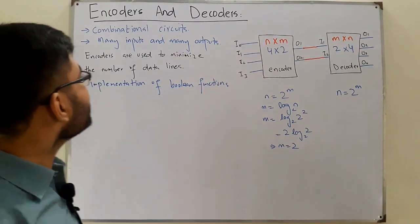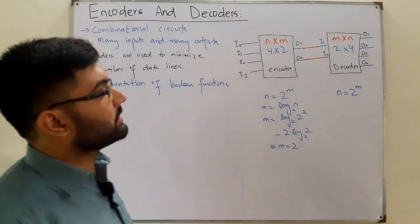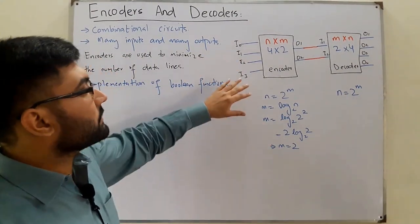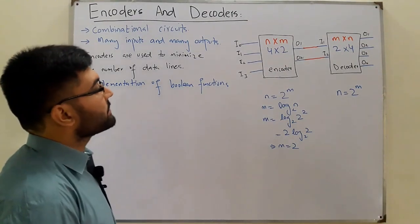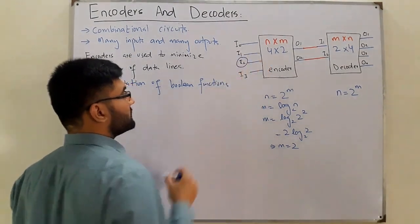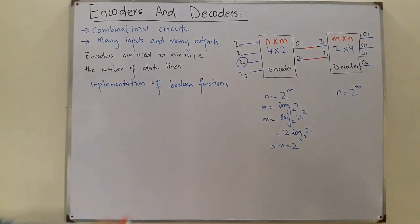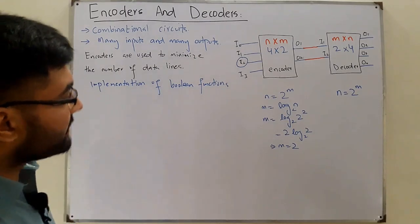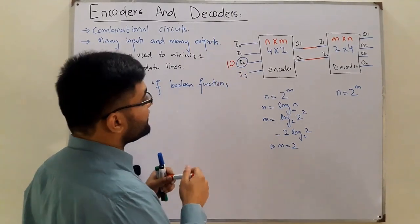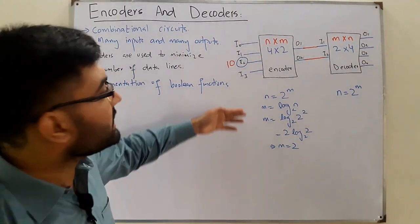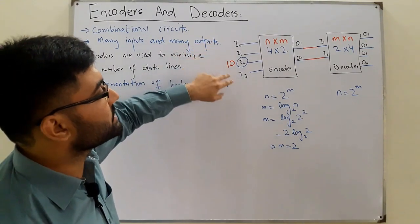How do encoders minimize data lines? Say we have four incoming lines. If i2 is high and the rest are low, we don't need the others. In binary, the lines represent: i0 = 00, i1 = 01, i2 = 10, i3 = 11. So i2 corresponds to the binary value 10.